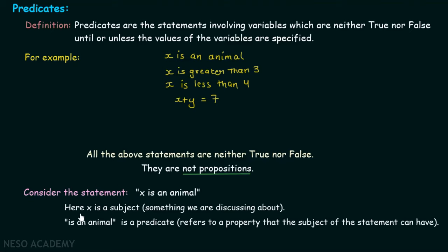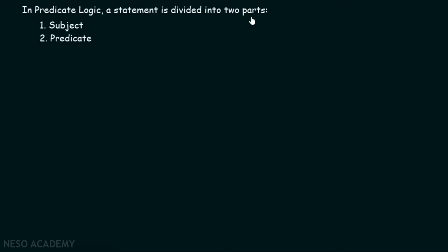Now, consider the following statement: x is an animal. Here, x is a subject — something we are discussing about. This is a subject and 'is an animal' is a predicate, because it refers to a property that the subject of the statement can have. So x is basically representing a subject and 'is an animal' represents a predicate. In predicate logic, a statement is divided into two parts: the first part is the subject and the other part is the predicate.